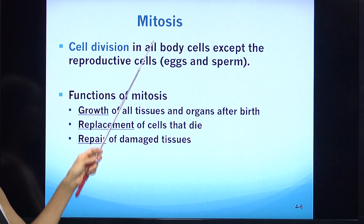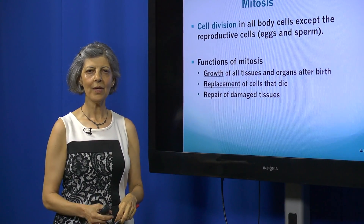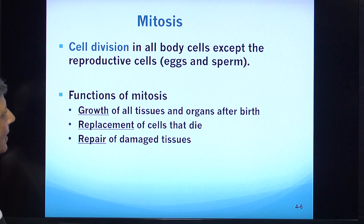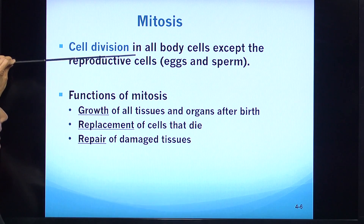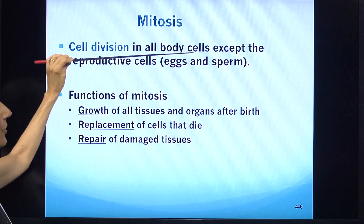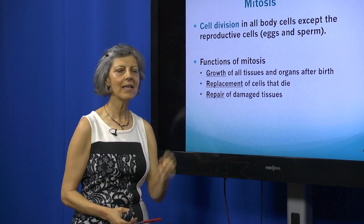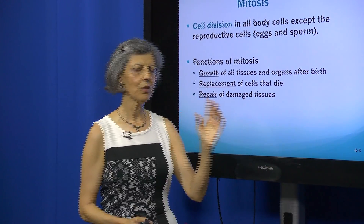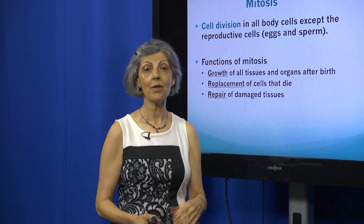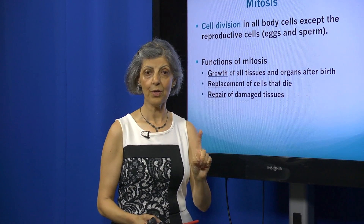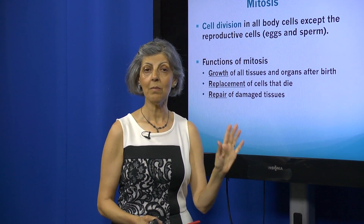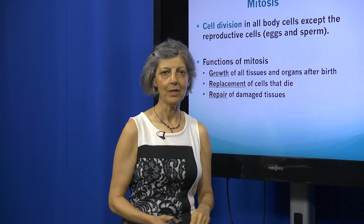We are going to look at the M phase, the mitosis phase. Mitosis is the division of the nucleus, and cell division will occur in all body cells except the reproductive cells. So muscle cells, liver cells, bone cells, and skin cells all divide by mitosis, except sperm and eggs, which divide by a completely different process called meiosis — and we will look at that in a different presentation.